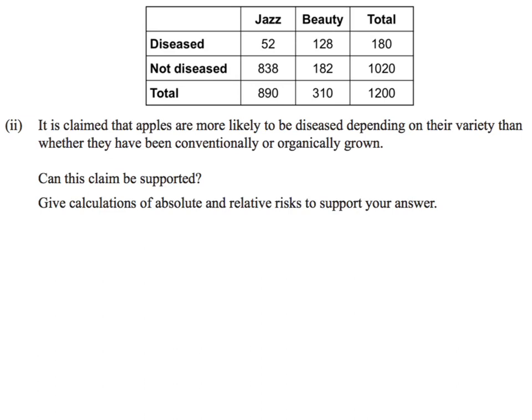So now let's have a look at our question. It's claimed that apples are more likely to be diseased depending on their variety, than whether they've been conventionally or organically grown. And so we need to have some calculations to support this.